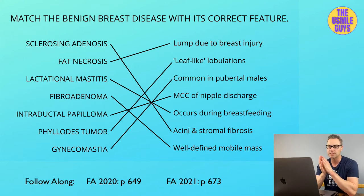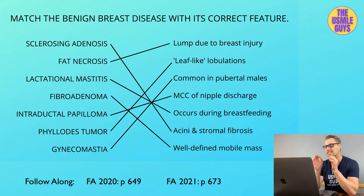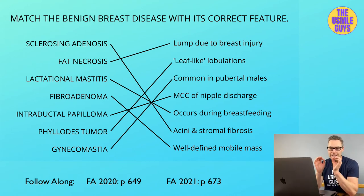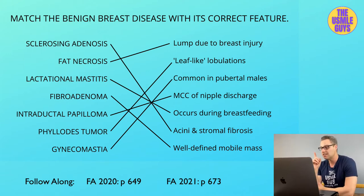Sclerosing adenosis is characterized by sinai in stromal fibrosis and is associated with calcifications. This may be associated with a slight increase in cancer risk. The epithelial hyperplasia subtype is characterized by cells in the lobular epithelium or the terminal ducts, and if there is presence of atypical cells, that does increase the risk of carcinoma development.